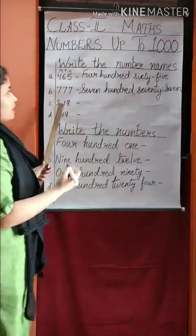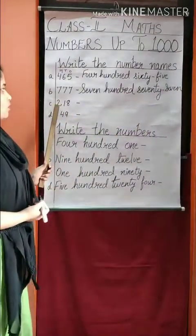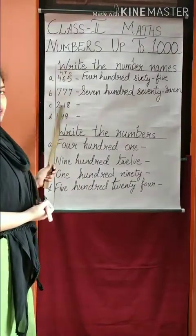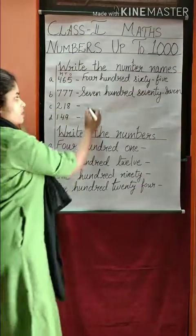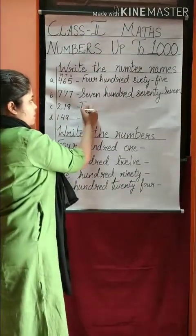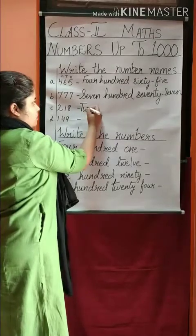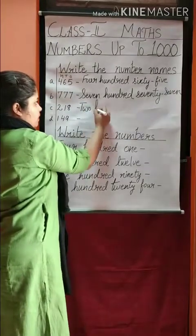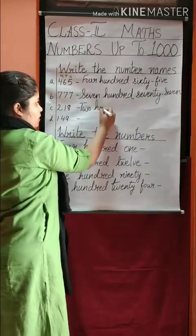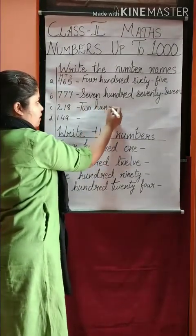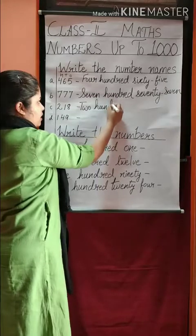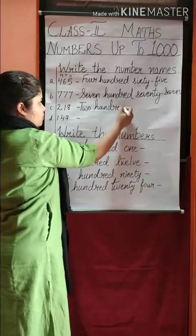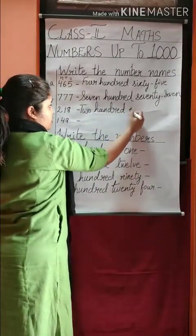Next is 2 in the 100's place and 80 in the 10's place. So we will write two hundred eighty.